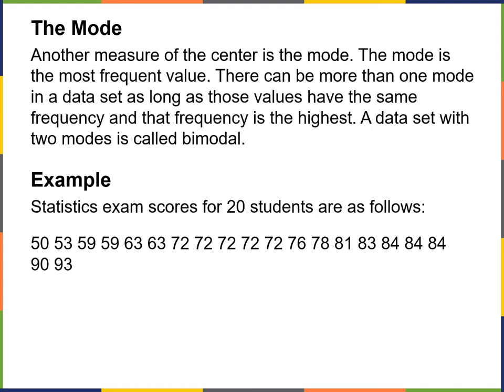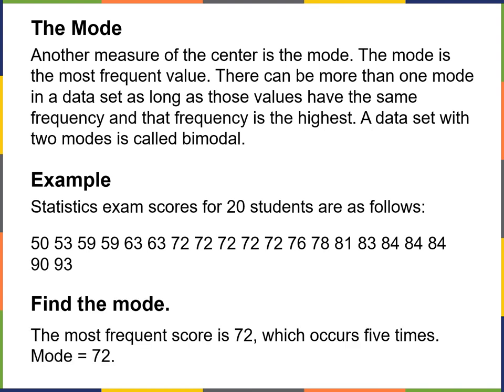Just looking at this dataset, I can tell that 72 is the mode. The reason is there are six scores out of 20 students — six of them scored a 72 on the exam. It's the most common number. Actually, the most frequent score occurs five times, and the mode is 72.